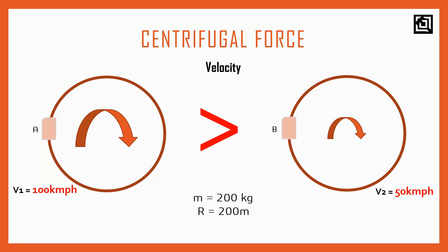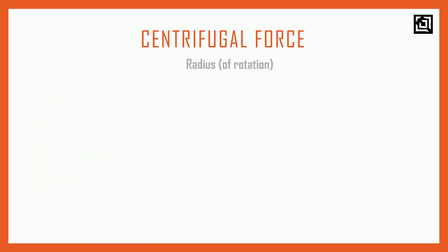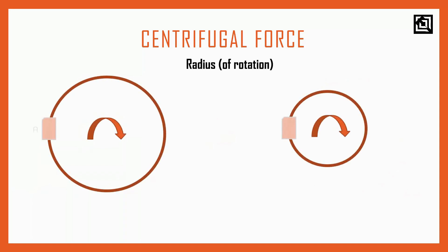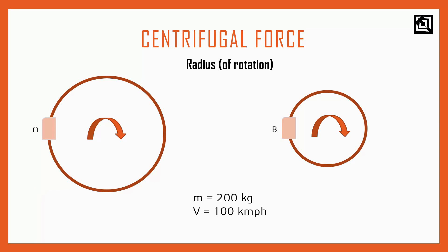Now let's take a look at the final parameter: the radius. We vary the radius while keeping mass and velocity constant. Now let's look at all three factors in a practical way.